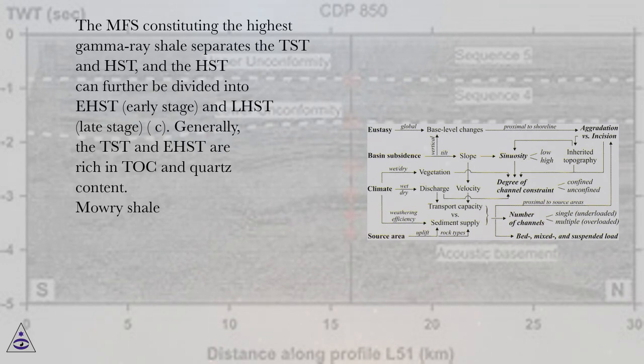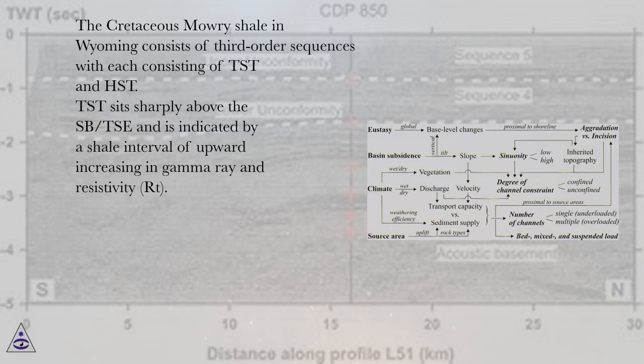Mori shale. The Cretaceous Mori shale in Wyoming consists of third-order sequences with each consisting of TST and HST. TST sits sharply above the SB-TSE and is indicated by a shale interval of upward increasing gamma-ray and resistivity (RT).